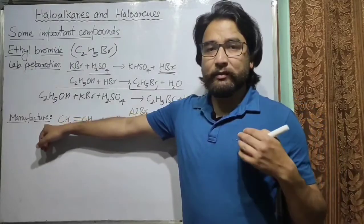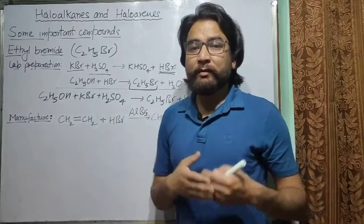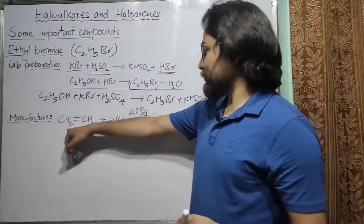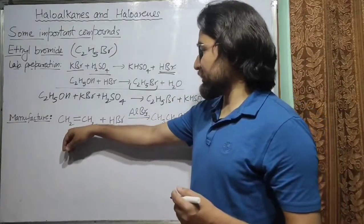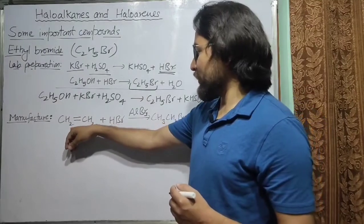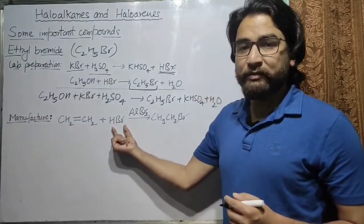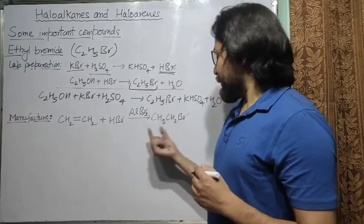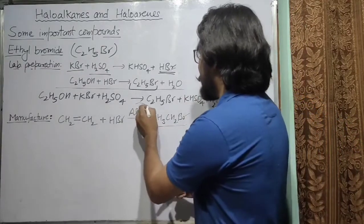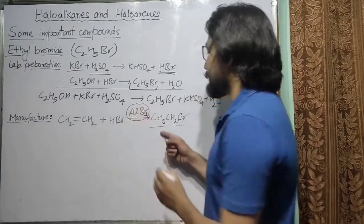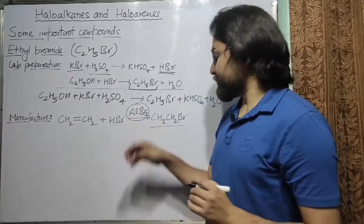Bromoethane can also be manufactured industrially from ethylene. On reaction of ethylene with HBr (hydrogen bromide) in the presence of AlBr3 (aluminium bromide) as a catalyst, you can form CH3CH2Br, which is bromoethane.